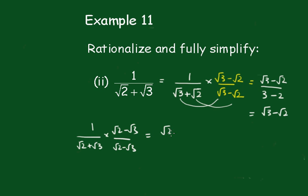root 2 minus root 3 over 2 minus 3, which is root 2 minus root 3 over minus 1. And that's not fully simplified. We should multiply the top by negative 1 and change them around so it becomes root 3 minus root 2.